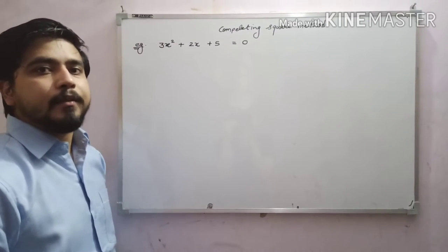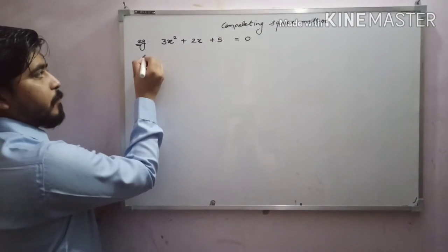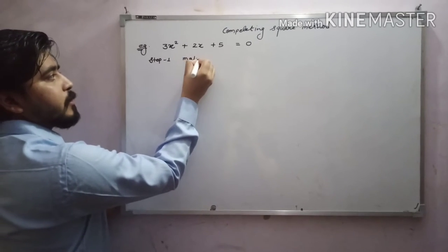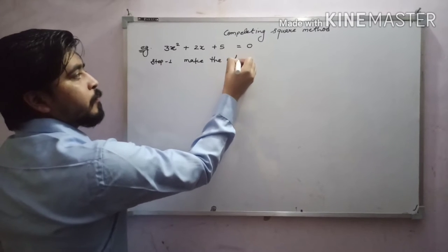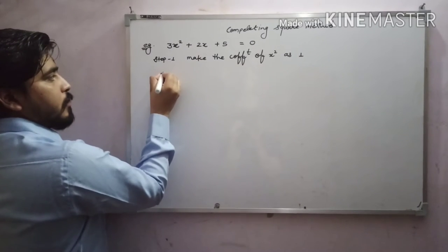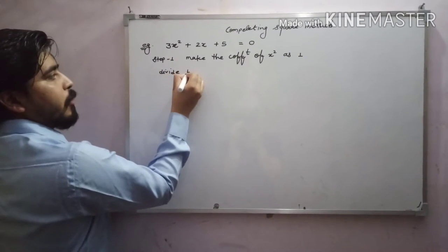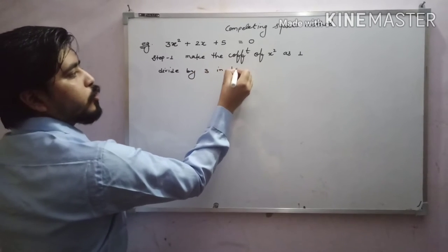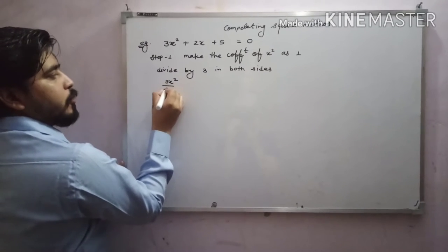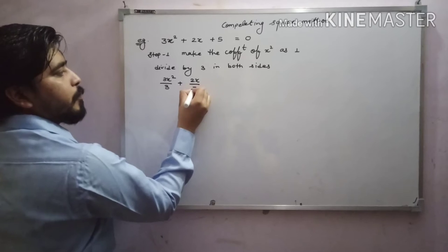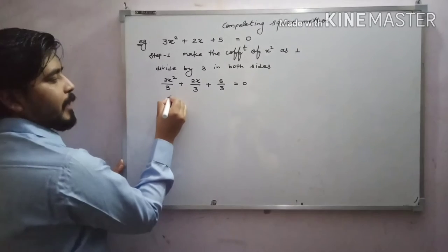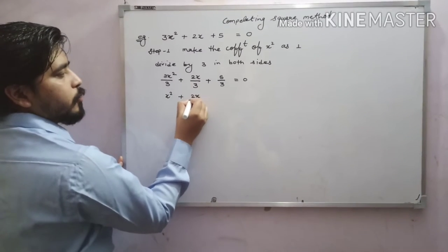So first step — we will do this method step by step. First step: make the coefficient of x² equal to 1. So divide by 3 on both sides: 3x²/3 + 2x/3 + 5/3 = 0.